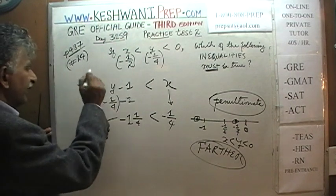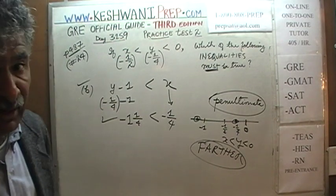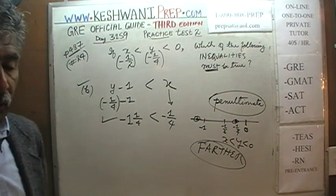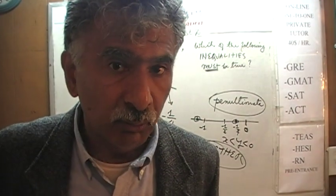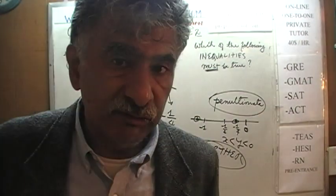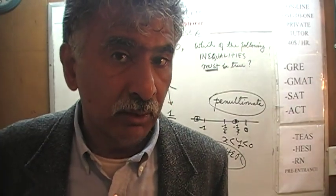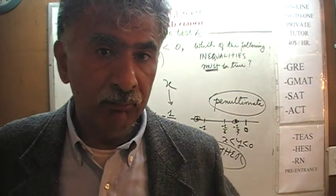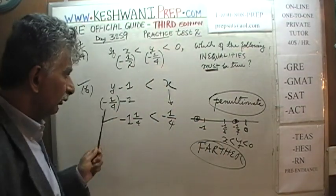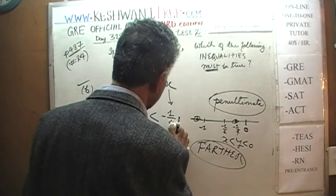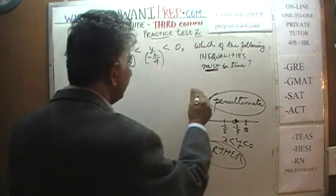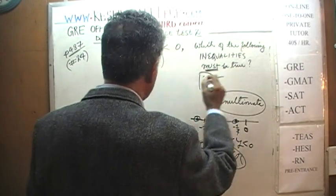So B works — it is a candidate. But that does not mean B is the answer. We have to go through all five choices and make sure the others do not work. We may have to go two rounds before we can narrow down to one. Don't be hasty — don't pick B yet.